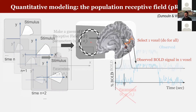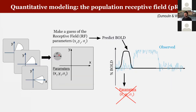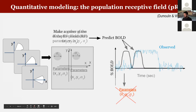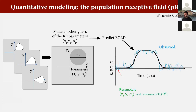We want to know what a given voxel's population receptive field is — which area of visual space it represents and what size. With just three parameters — X, Y, and Sigma (the diameter) — we can describe which part of the eye that voxel is computing information from. We make a guess of the receptive field parameters X, Y, and Sigma, make a prediction of the BOLD response, and we keep changing the parameters until we get the combination that gives the best goodness of fit between the predicted and actual BOLD time series.